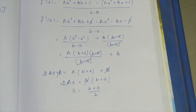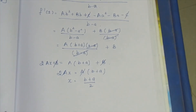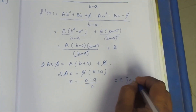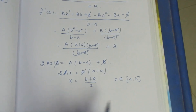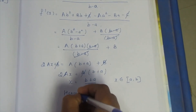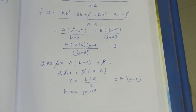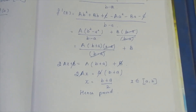x = (A + B)/2 is proved. Both sums are complete. Thank you.